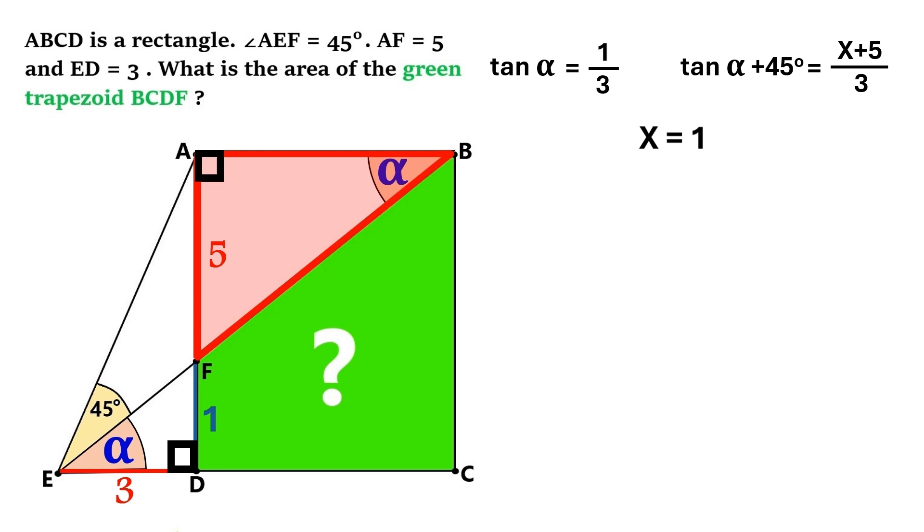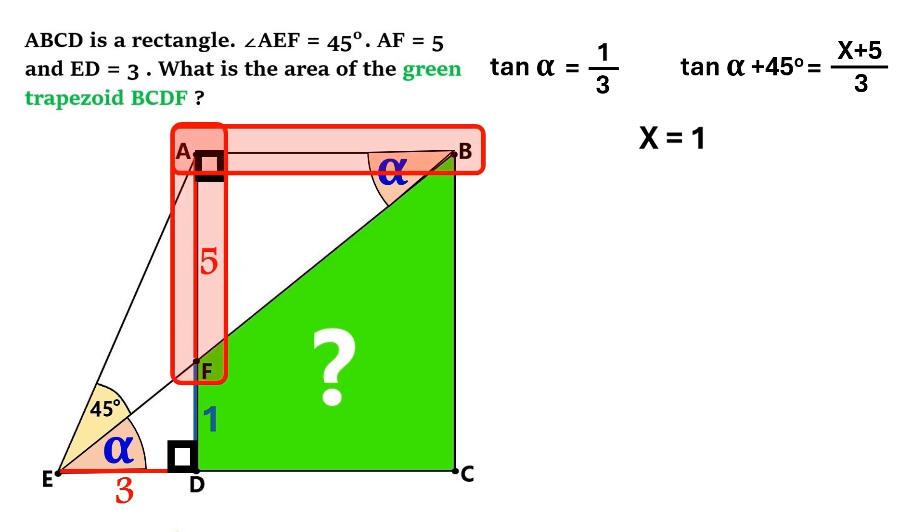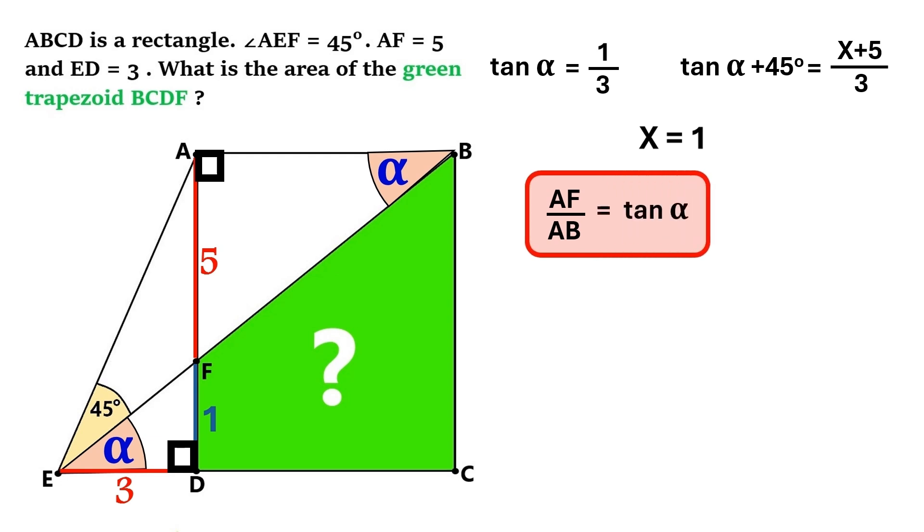And we've got this right triangle over here. We can take these two sides and combine them into this fraction, which equals tangent alpha. And we already know that AF is 5. We know the value of tangent alpha too. So let's substitute that as well.